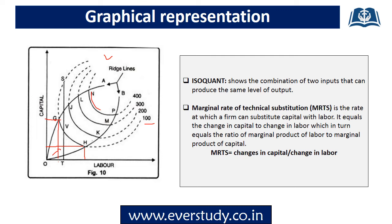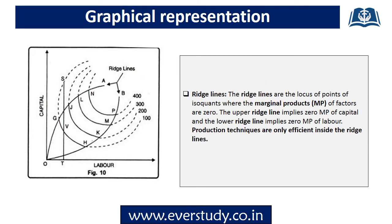Now we will talk about Ridge Lines and their role in the Economic Region of Production. In this graph, we can see lines connected to specific points — this is our upper ridge line and this is our lower ridge line. Production within these ridge lines falls in our Economic Region of Production. Production outside these ridge lines is waste production. On the upper ridge line, marginal product of capital equals zero. On the lower ridge line, marginal product of labor equals zero. Production techniques are only efficient inside the ridge lines.